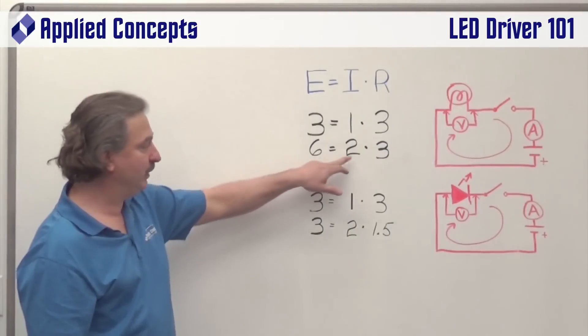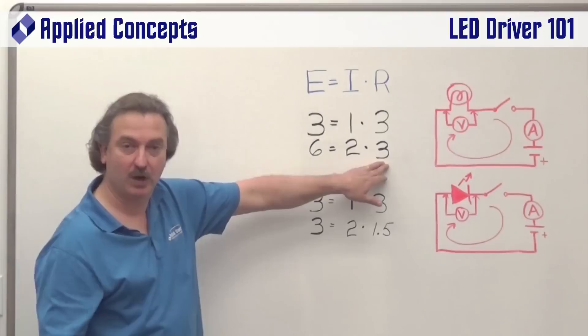If we impressed 3 volts of voltage across it, we would expect 1 amp of current to flow. Of course, double the voltage, we would expect double the current, because the impedance is fixed for all practical purposes.